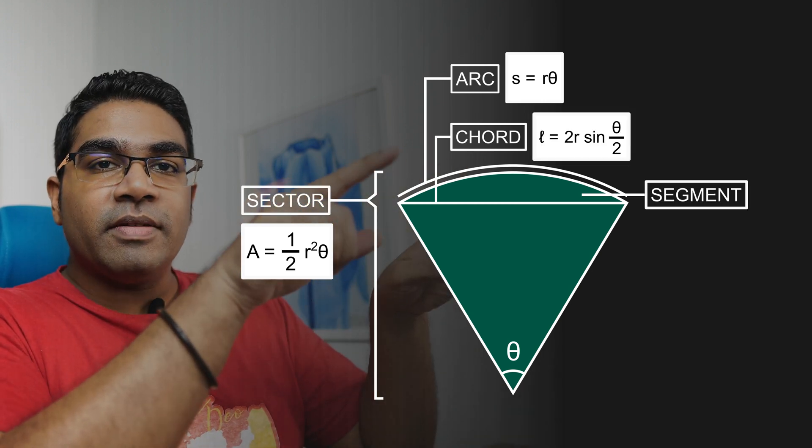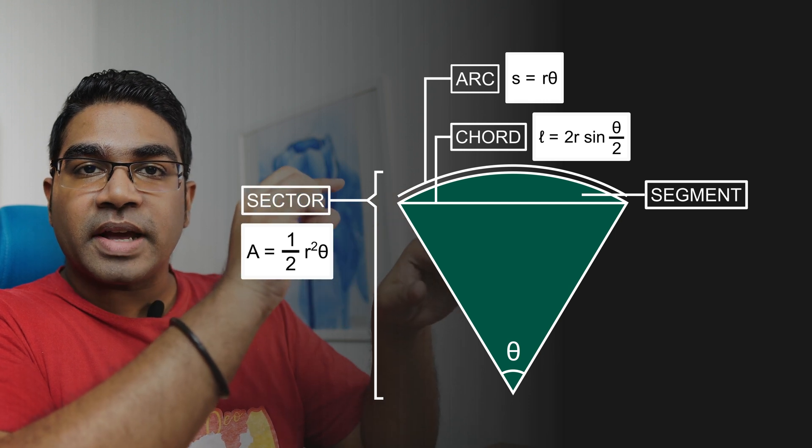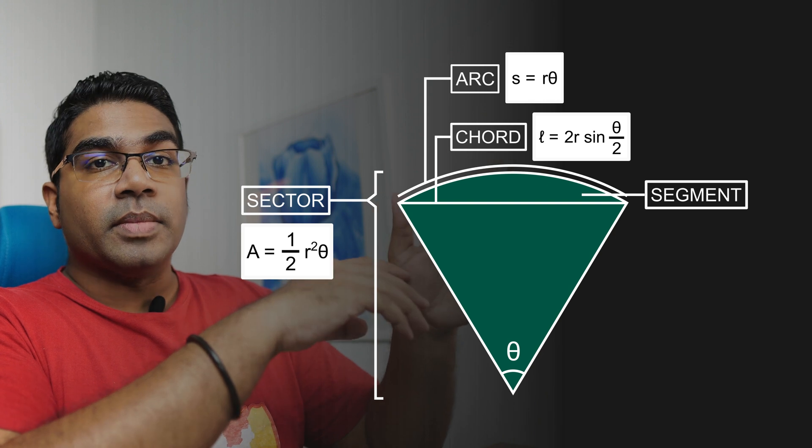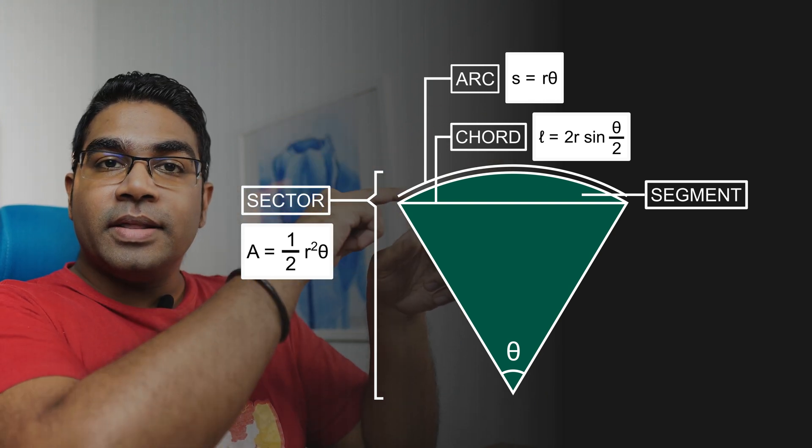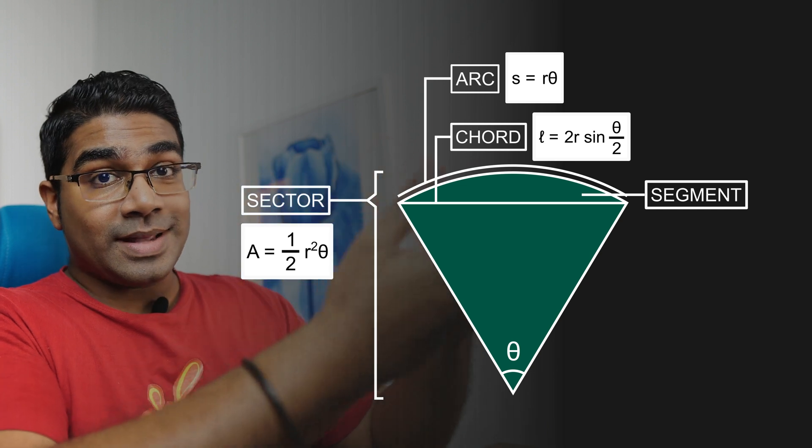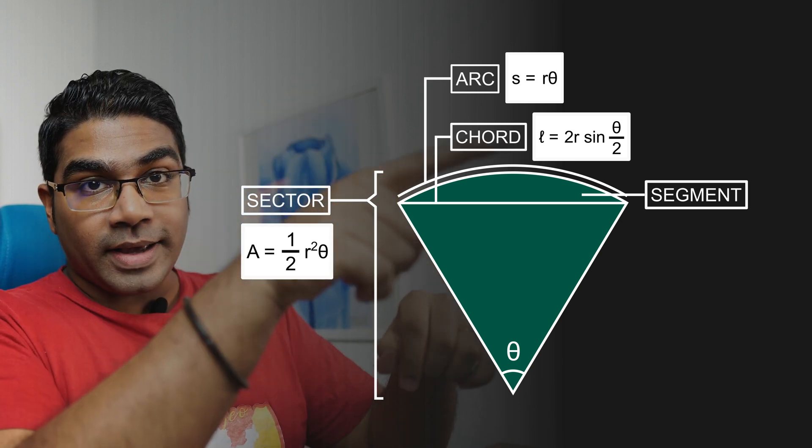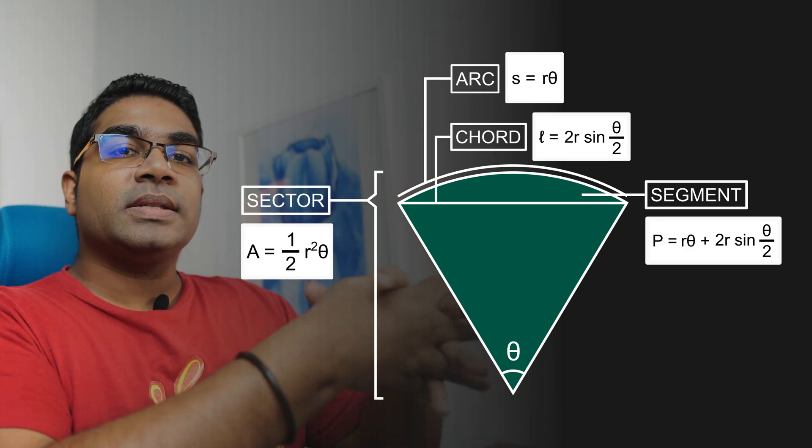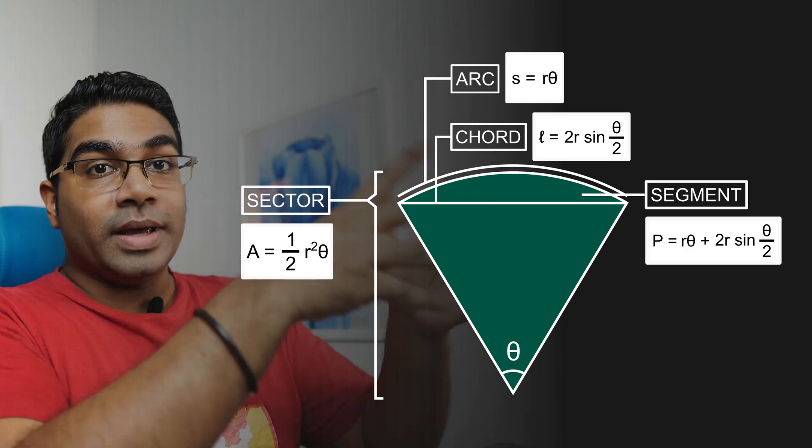And then finally we have this area here - this small piece of the sector is known as the segment. The perimeter of the segment, which is the arc and the chord of the sector, is simply the sum of the arc length and the length of chord. So that is rθ + 2r sin(θ/2).